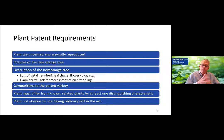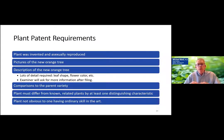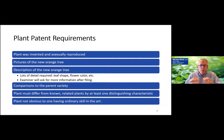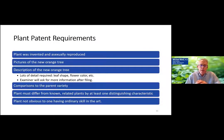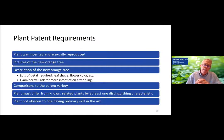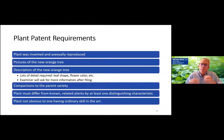For plant patent protection for orange trees, the plant must be invented and asexually reproduced. You need pictures of the orange tree and must provide a lot of detail — leaf shape, flower color, etc. One unique aspect is that unlike utility patents, where you can't add new subject matter once filed, with a plant patent application you can add additional subject matter — in fact, the examiner usually demands it. You need to provide comparisons to the parent variety, and the plant must differ in some characteristics and must not be obvious. Clearly, showing our orange tree is resistant to citrus greening meets that criteria.